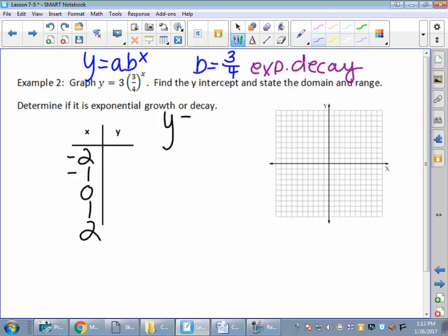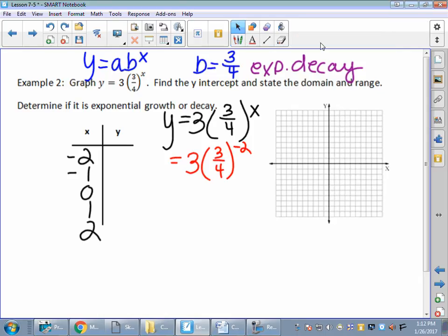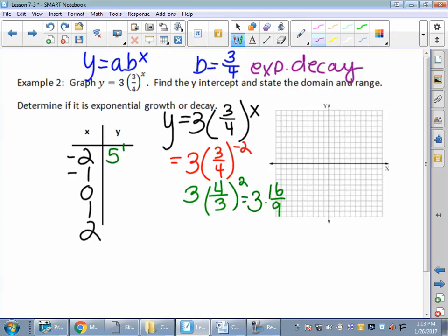So I'm going to take my equation, 3 times 3 fourths to the x. You probably are going to want a calculator as we do this math. I'm going to put a negative 2 in here. 3 times 3 fourths to the negative 2. Well, that negative 2 tells me I have to use a reciprocal, so 4 thirds to the positive 2. Multiply that by 3, so that means I've got 3 times 16 over 9, which ends up being 16 over 3, which ends up being 5 and one-third, 5.3 repeating. Check my calculations on that one. I could be off, but I think I got it.